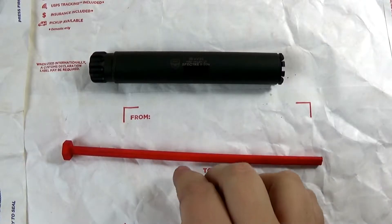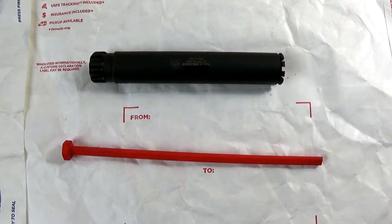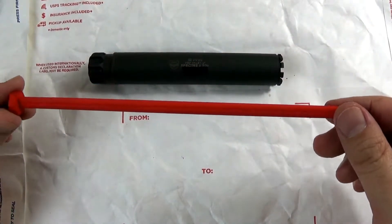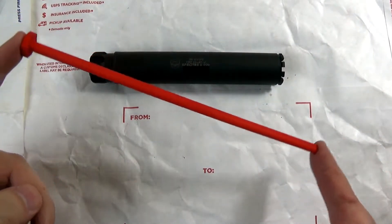Ryan Hamm here, and along with some other people on the internet I have devised a rod that helps you align the baffles on the SWR Silencer Co. Spectre 2 suppressor.